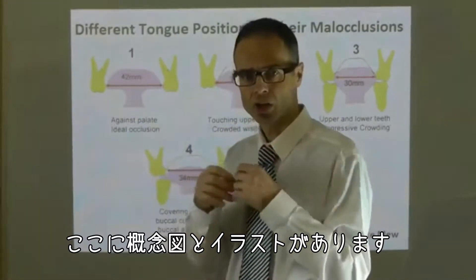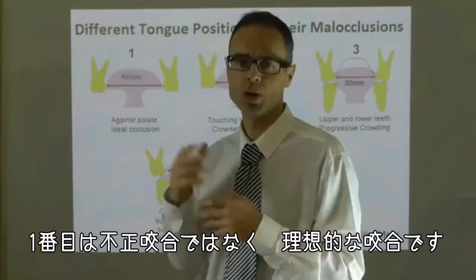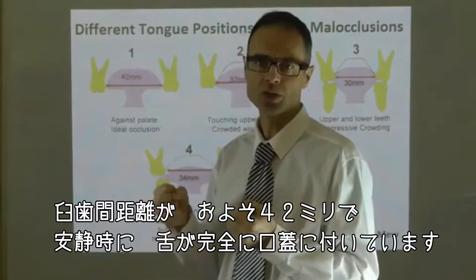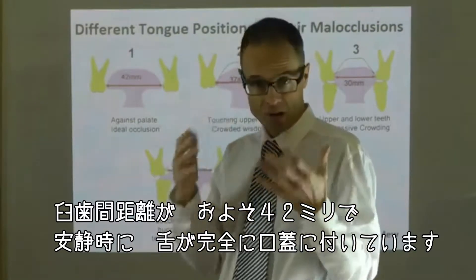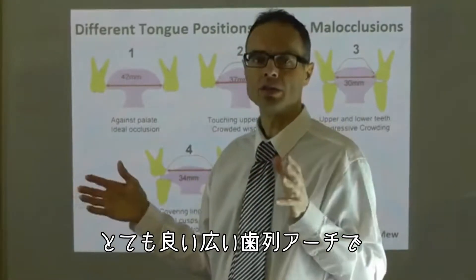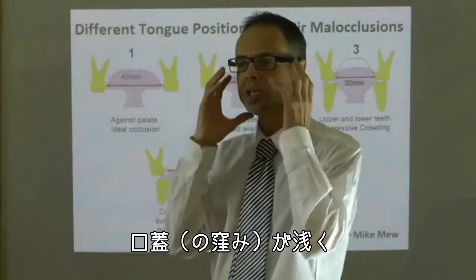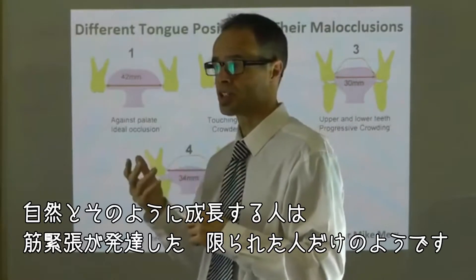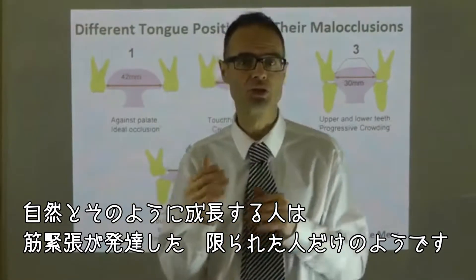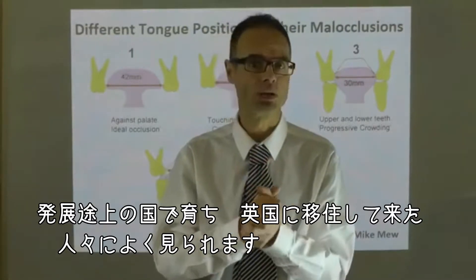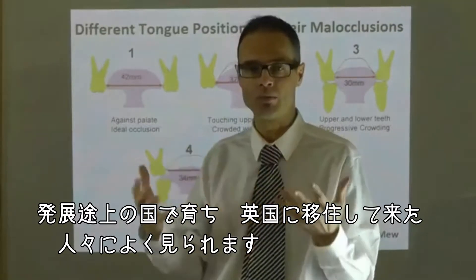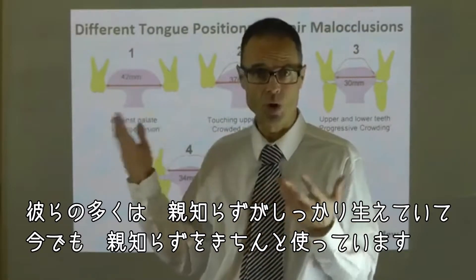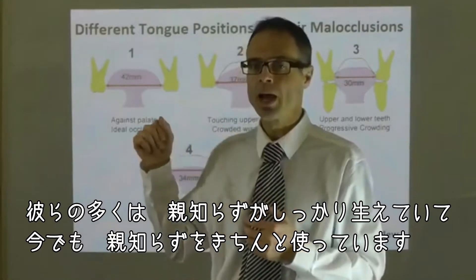Here are some graphic concepts and illustrations. The first is not really a malocclusion — it would be an ideal occlusion. With an intermolar width of approximately 42 millimetres, the tongue is fully up into the roof of the mouth at rest, producing a broad, wide dental arch and a shallow palate. This typically means a horizontally developed face with good bone structure. I tend to see this only naturally occurring in a few individuals with strong muscle tone, often brought up in less well-developed countries and relocated to where I practise in the UK. They usually have their wisdom teeth present and working in function, and an excellent occlusion.